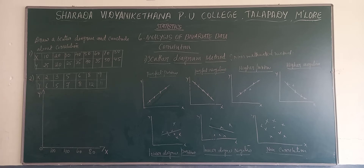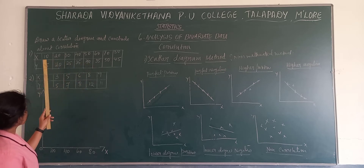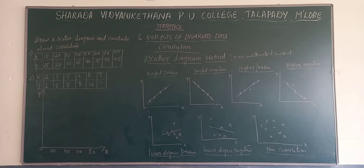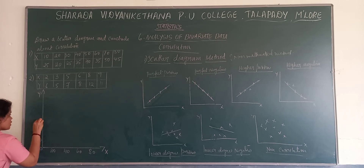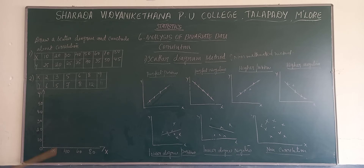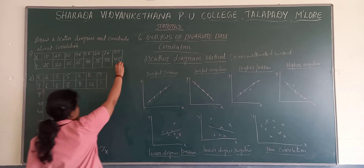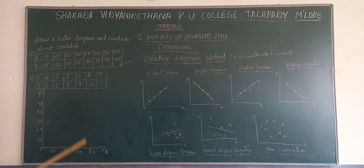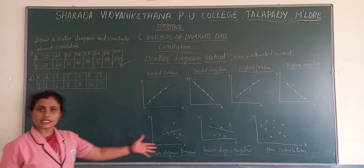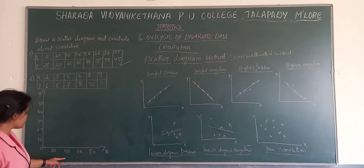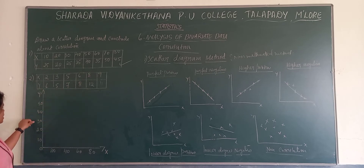For the x-axis we take 20, 40, 60, 80, and for the y-axis we take 10, 20, 30, 40, 50. Now we plot the values. For x = 10, y = 25; x = 20, y = 20; x = 30, y = 25; x = 40, y = 35; x = 50, y = 40; x = 60, y = 35; x = 70, y = 50; and x = 80, y = 45.